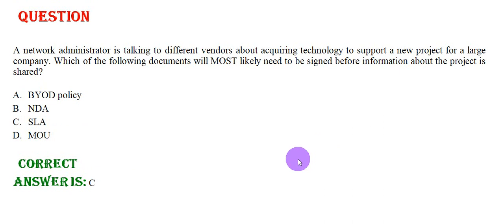A network administrator is talking to different vendors about acquiring technology to support a new project for a large company. Which of the following documents will most likely need to be signed before information about the project is shared? Option A: BYOD policy. Option B: NDA. Option C: SLA. Option D: MOU. The correct answer is Option C.